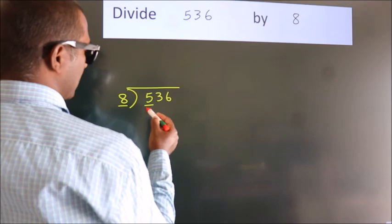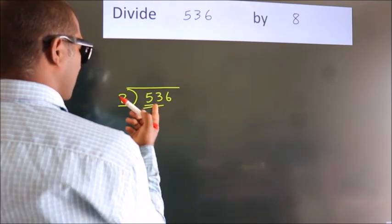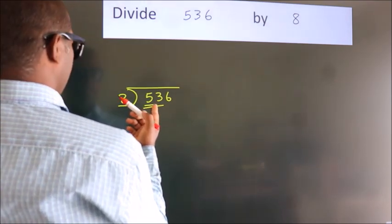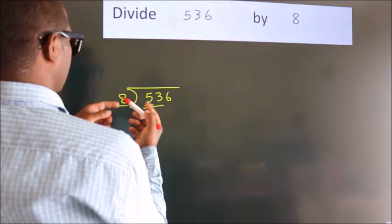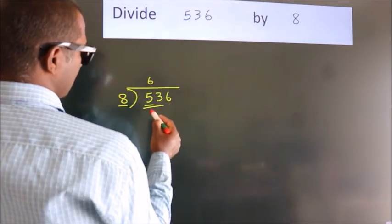So we should take two numbers: 53. A number close to 53 in the 8 table is 8 times 6, 48.